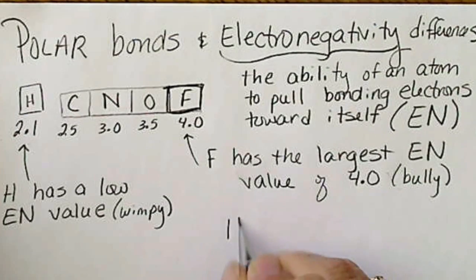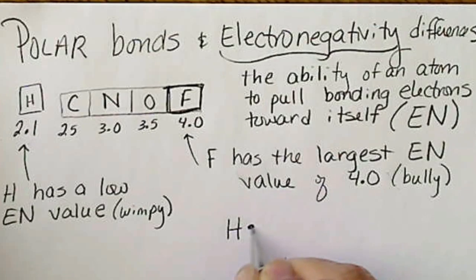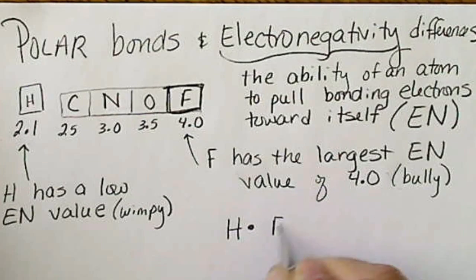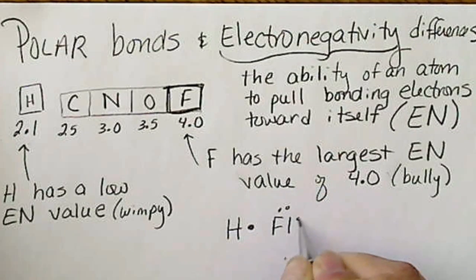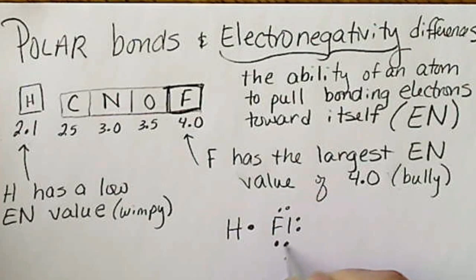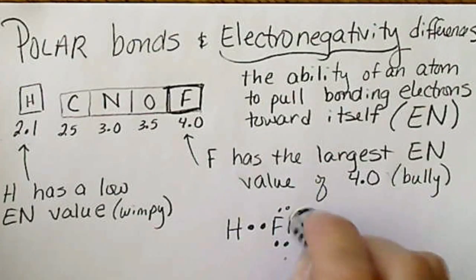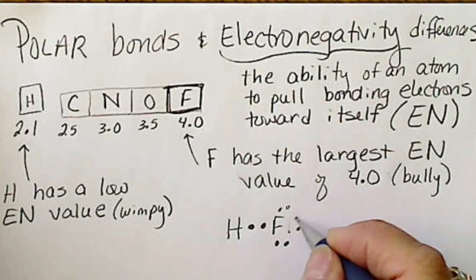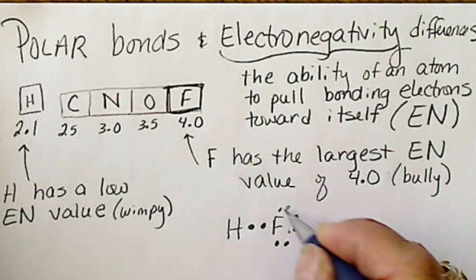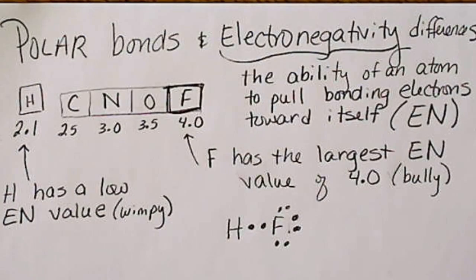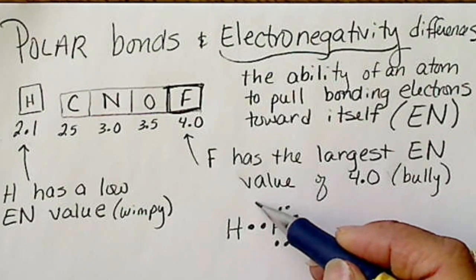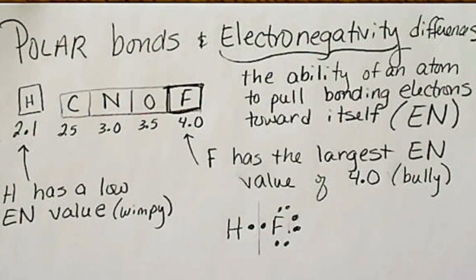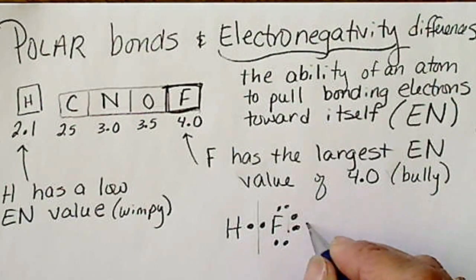So for example, if hydrogen with its one electron is bonded to fluorine, remember fluorine has seven valence electrons. So the molecule or the bond, the bond between a fluorine atom and a hydrogen atom would look like this. And this shows the sharing of electrons pretty equally. But what we really have, the actual molecule looks more like this.